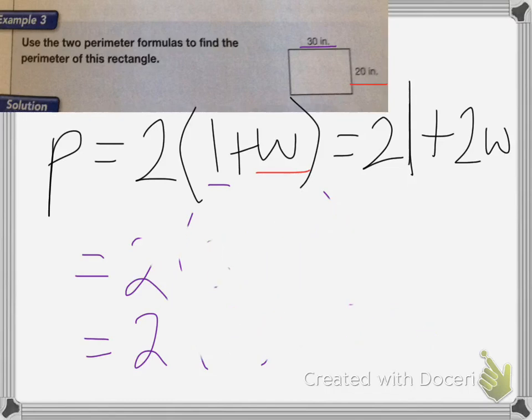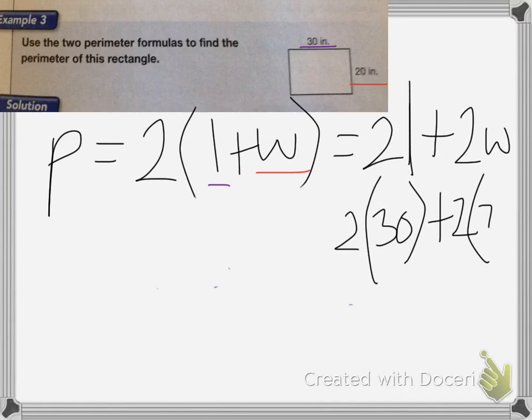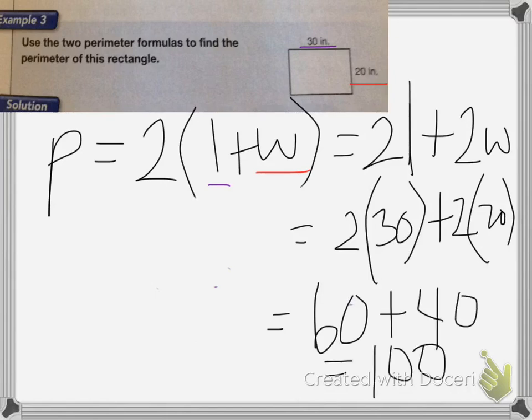If I do it the second method, I end up with 2 times 30 plus 2 times 20. So 2 times 30 is equal to 60 plus 2 times 20 is equal to 40, which is equal to 100 inches. It's got the same answer both times.